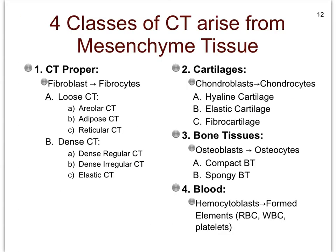Remember that all connective tissues arise from the mesoderm layer in the embryo. Some of those mesodermal cells can further differentiate to form mesenchyme tissue. All of us still have mesenchyme cells that function as stem cells for connective tissues in our body. This mesenchyme tissue, which is quite abundant in the embryo, will give rise to all four of the connective tissue groups, or classes. Our first class is the biggest — it's called the connective tissue proper, with six different connective tissues in it.